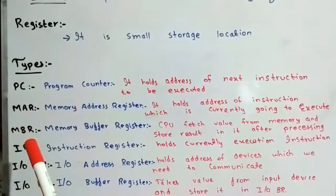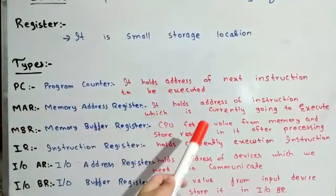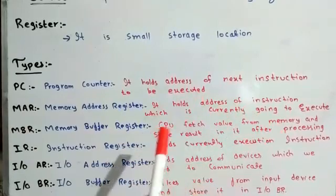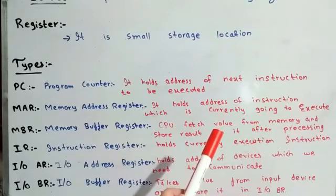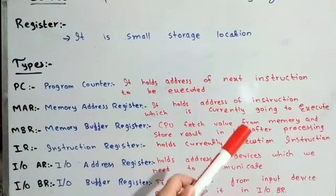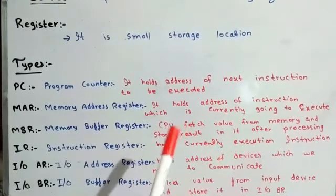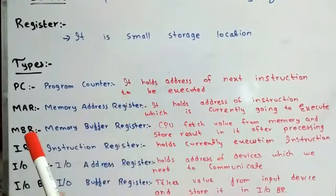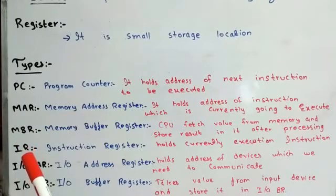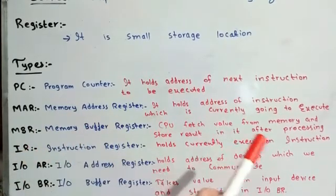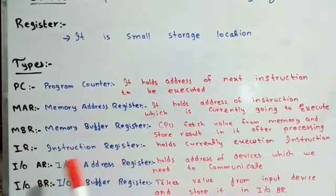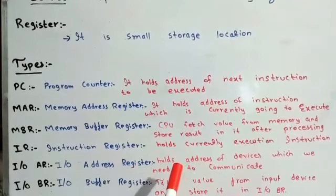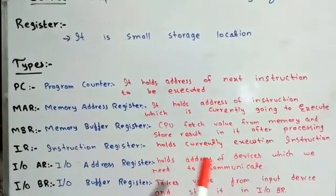Then MBR — Memory Buffer Register. The CPU fetches a value from memory, executes it, and then stores the result in the MBR. Then IR — Instruction Register. Then I/O-AR — Input/Output Address Register — which holds the address of the device we need to communicate with.